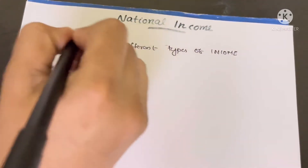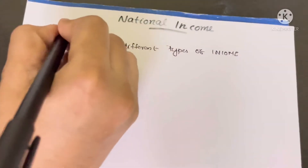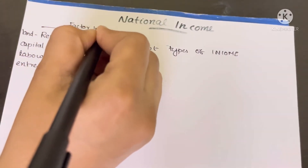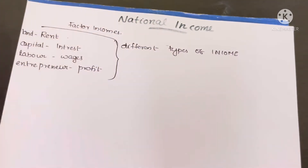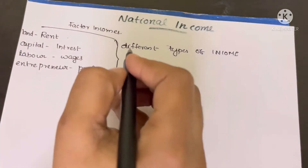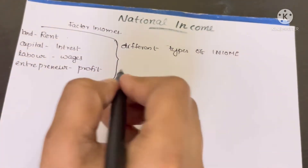So there is factor income. In economics, the factors and their incomes are: land earns rent, capital earns interest, labor earns wages, and entrepreneurship earns profit. These are factor incomes.